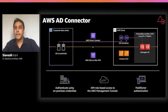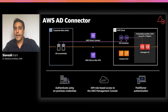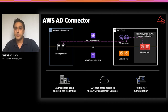AD Connector is a directory gateway that redirects directory requests to your on-premises Microsoft Active Directory without caching any information in the cloud. It comes in two sizes — small and large — and you can spread application loads across multiple AD Connectors to scale performance. Benefits include allowing end users and IT administrators to use existing corporate credentials to log on to AWS applications like Amazon WorkSpaces, WorkDocs, and WorkMail, manage AWS resources via IAM role-based access, and enable multi-factor authentication by integrating with your existing RADIUS-based MFA infrastructure.